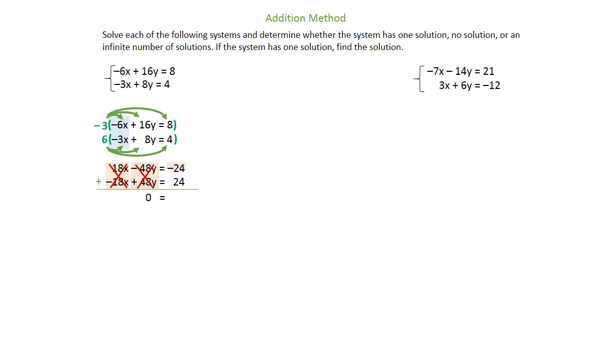On the right-hand side, your negative 24 and positive 24 also cancel. So that gives us a final expression of 0 equals 0, which is true. Because this is true, this is infinitely many solutions. When that happens, it means that the lines are the exact same line and they're lying right on top of one another.